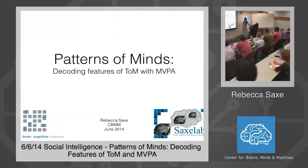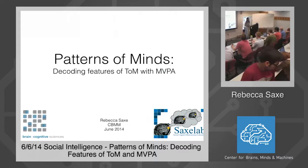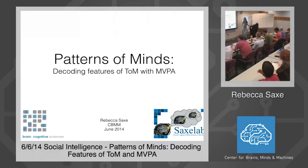Thanks so much for having me here. I keep hearing wonderful things about what's going on at the school — sounds like a really fun time. The weather could hardly be more beautiful. So I'm going to tell you today about some of the work going on in my lab recently, using techniques you've heard about already in this summer school — fMRI and decoding techniques — and now applying them to social cognition, as a connection between the neuroscience and social cognition for the rest of this program.